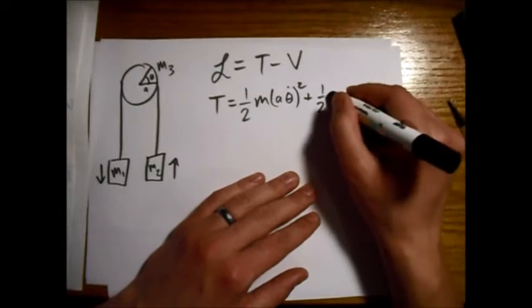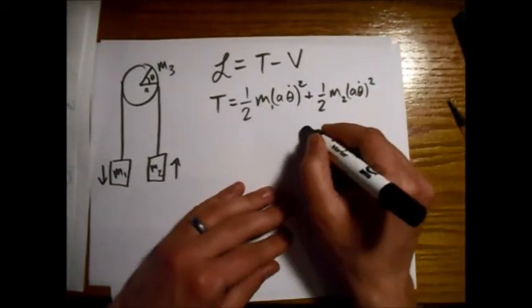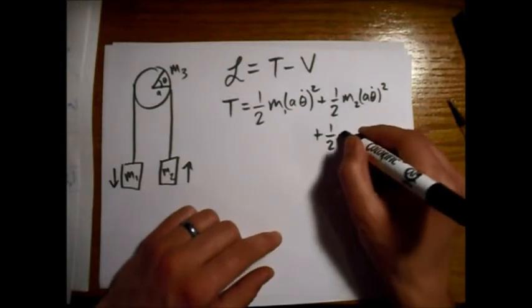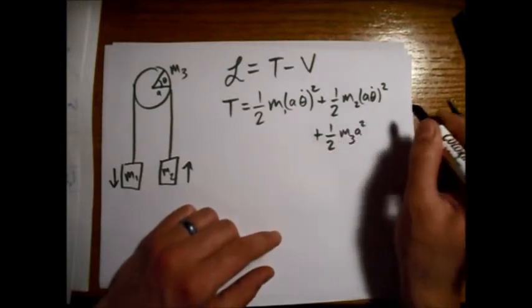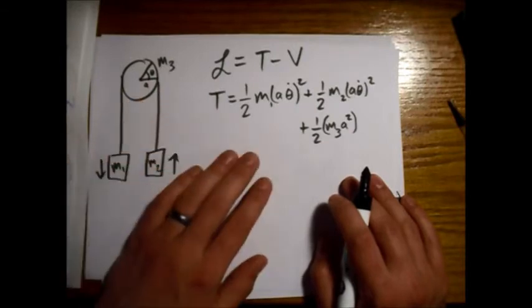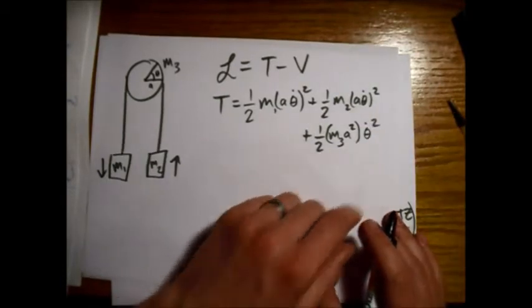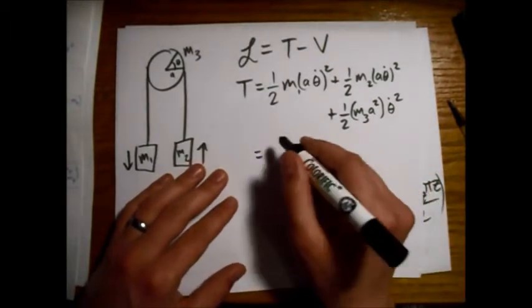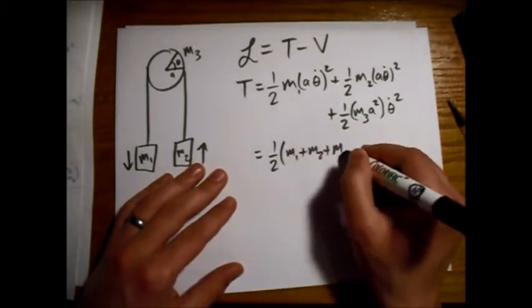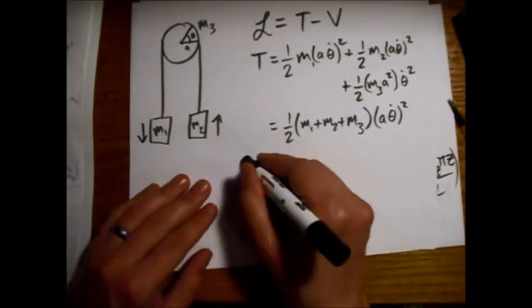Plus, for the other mass. Okay, this is mass one. Mass two, a theta dot squared again. Plus the one-half, the moment of inertia of this hoop, which is m3 a squared for a hoop. And then the angular velocity of the hoop, which is theta dot squared. Angular velocity squared. And so this simplifies down nicely. One-half the sum of the masses, m1 plus m2 plus m3, and then a theta dot for all of them. And that's squared. Now for the potential energy.